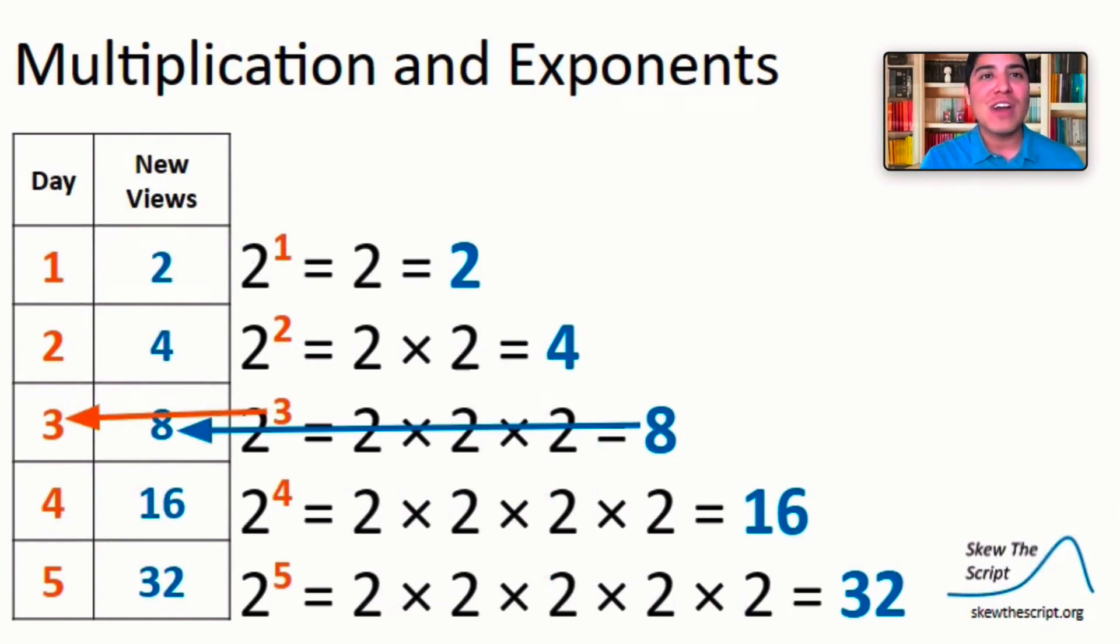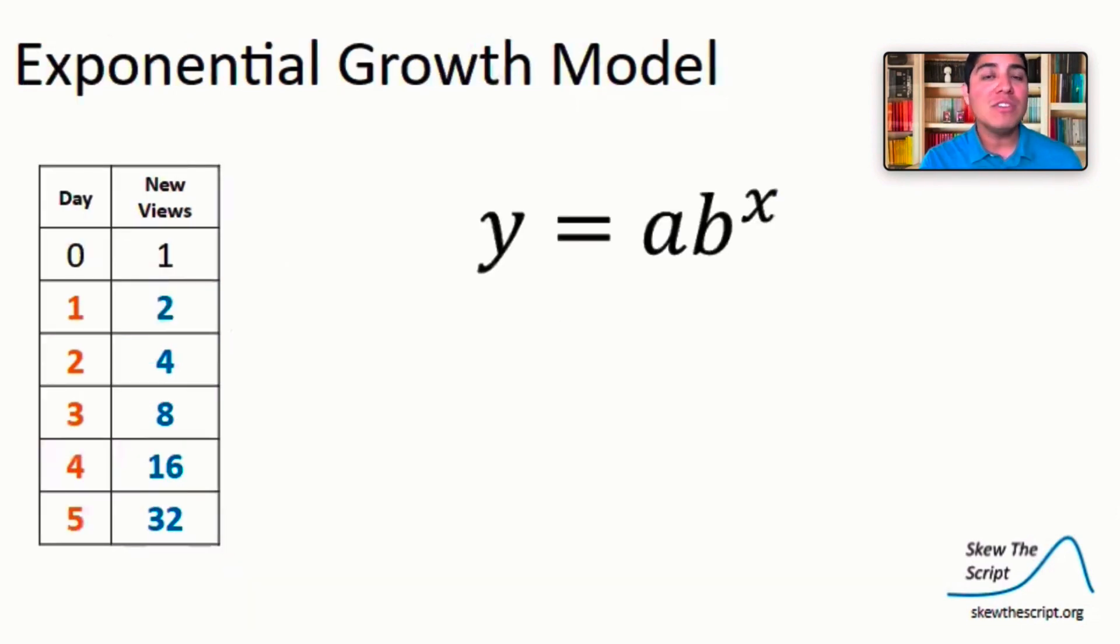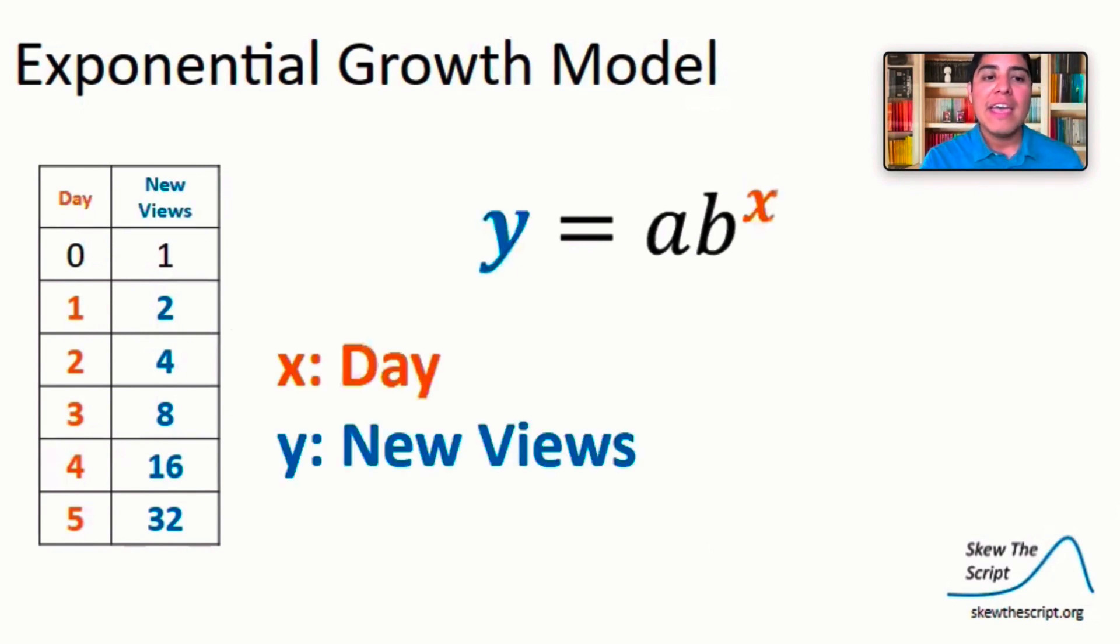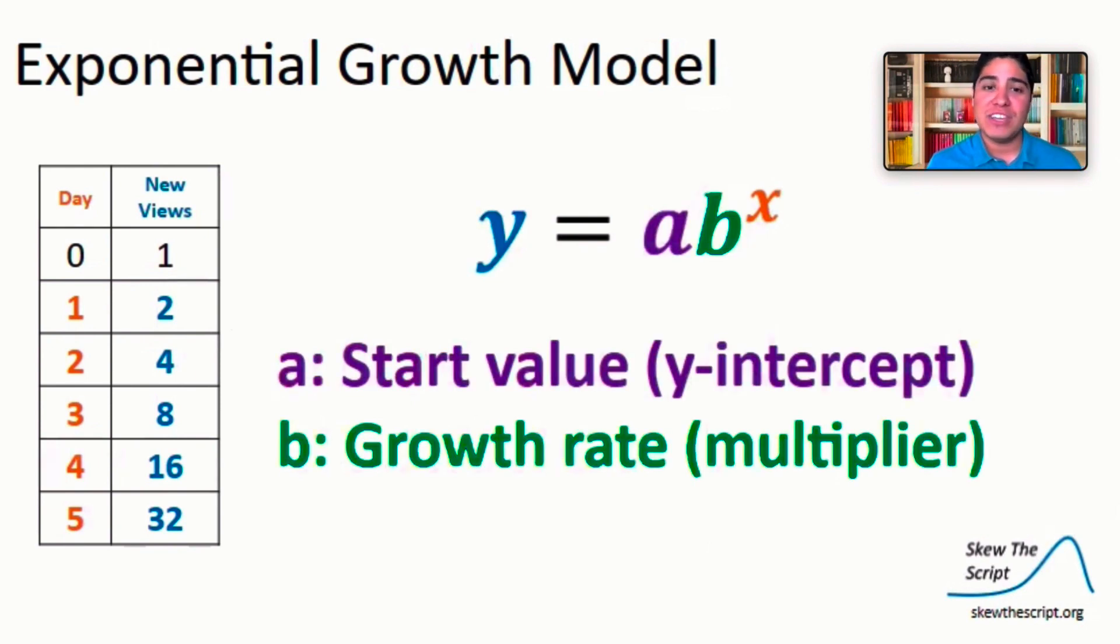Now let's try writing an equation to show the relationship we just discovered. We'll start with this model here. y equals a times b to the x power. Here, our x variable still represents the days, and our y variable still represents new views. Pause the video to reflect. What do you think a and b are going to represent? This is our general form of the equation. A represents our start value, or the y-intercept, and b represents our growth rate, or the multiplier.